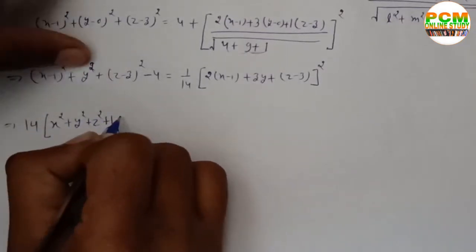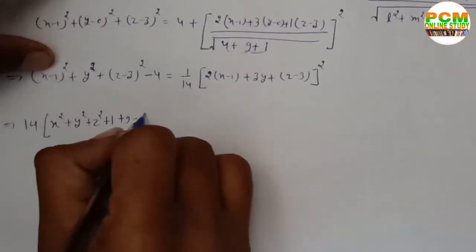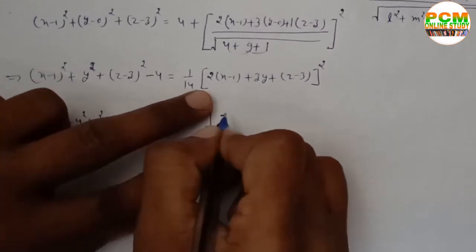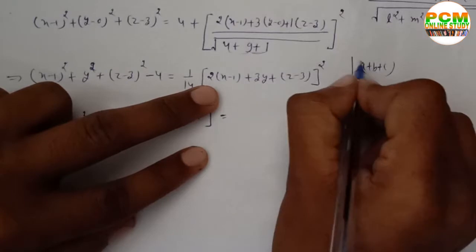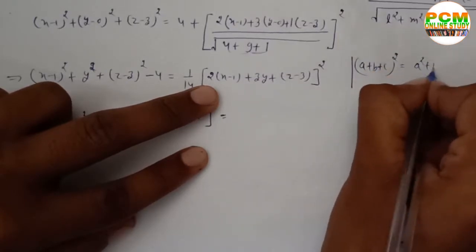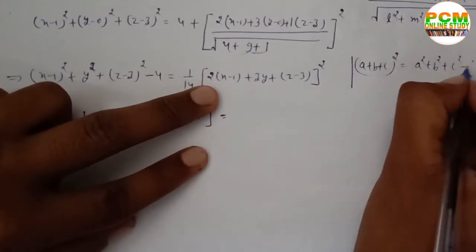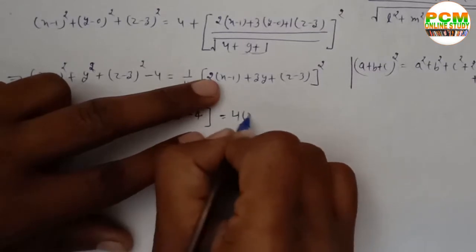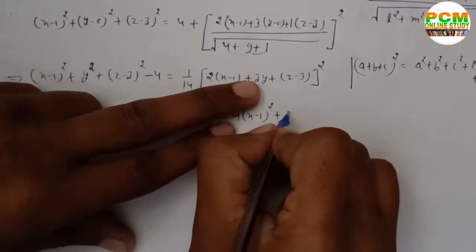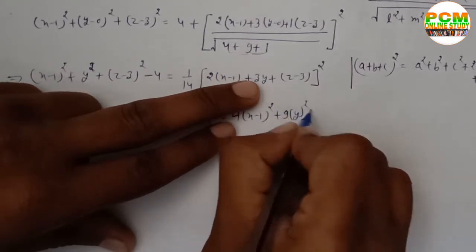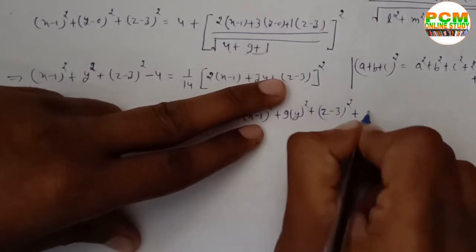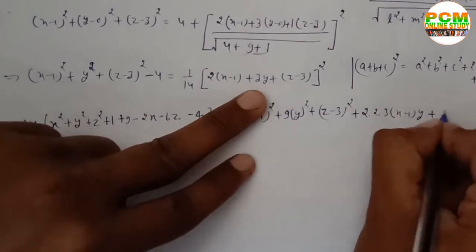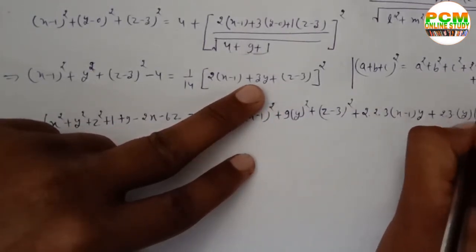We apply the formula (a+b+c)² = a²+b²+c²+2ab+2bc+2ca. Here a = 2(x−1), b = 3y, c = (z−3). Expanding: a² = 4(x−1)², b² = 9y², c² = (z−3)².